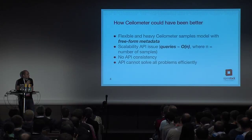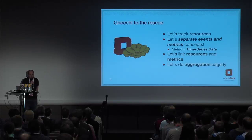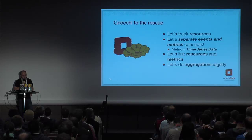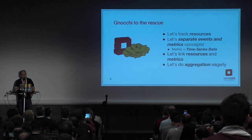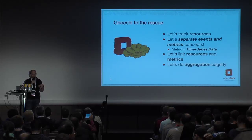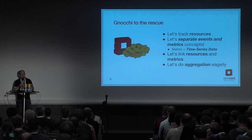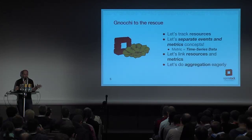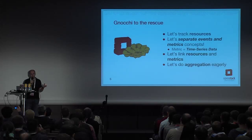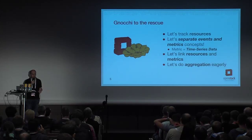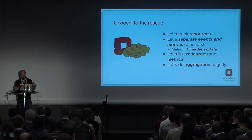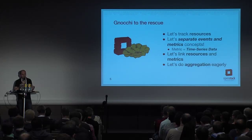So we decided it was a good time to solve this problem and start something maybe from scratch. That's what we did with Gnocchi. We changed the paradigm behind how we store things. The first thing we started to do in Gnocchi is to track resources. In Ceilometer, the only data structure is Sample — I measure something, like CPU on an instance, and send everything back, including all the information about that instance. I do that every time I measure anything. That's a lot of data, and it doesn't help you know when the resource was actually created.